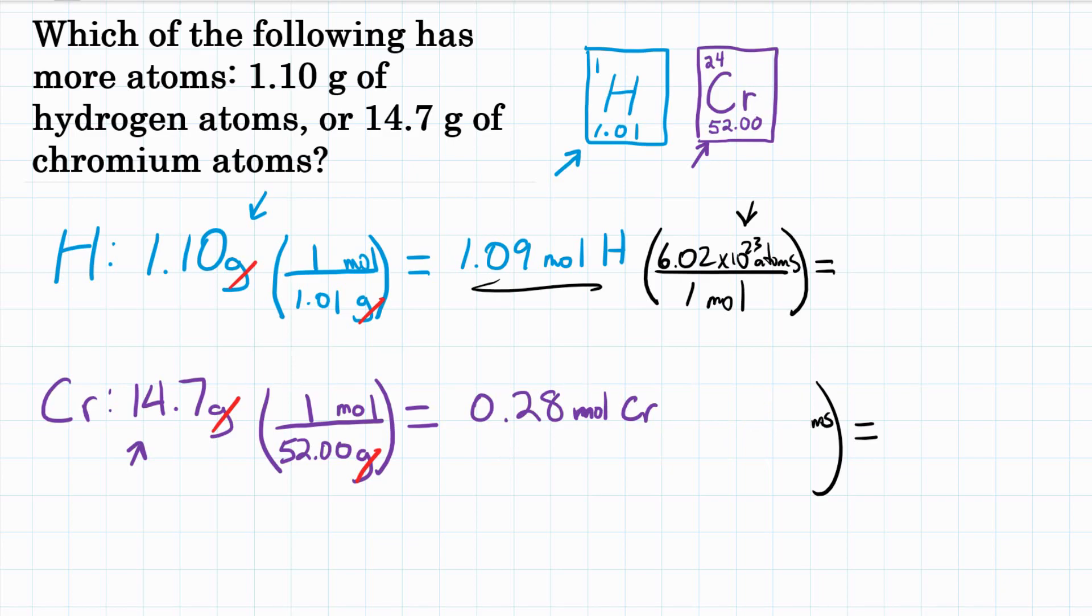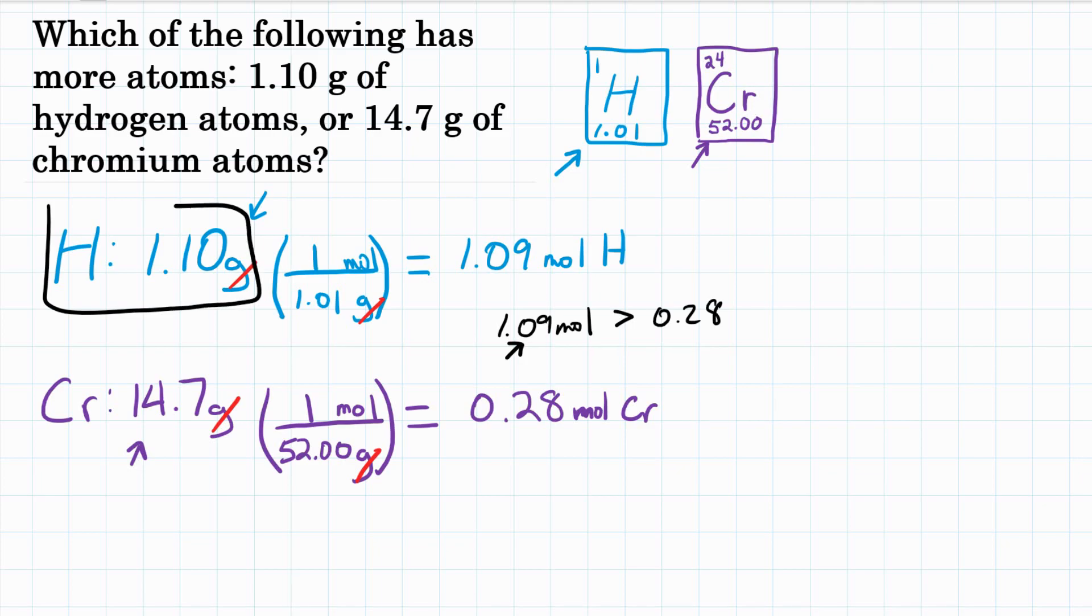So let's get rid of this because we don't need any of this. That would only be an extra step. We know that 1.09 moles for hydrogen is a bigger number than 0.28. So 1.09 moles is going to be more atoms. So final answer: hydrogen, specifically 1.10 grams of it, is more atoms than 14.7 grams of chromium.